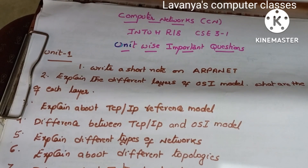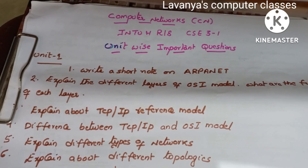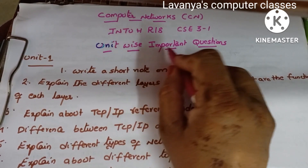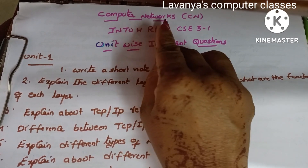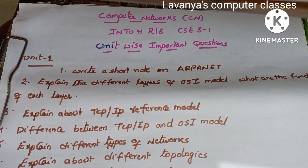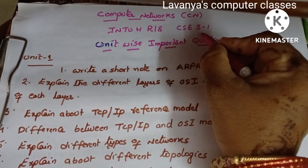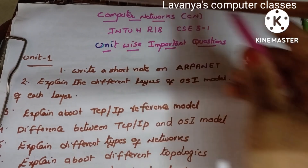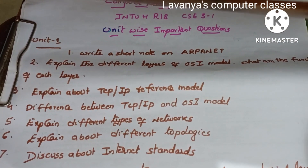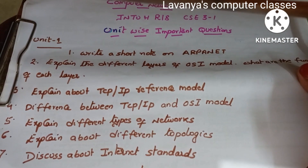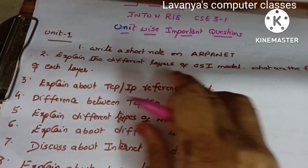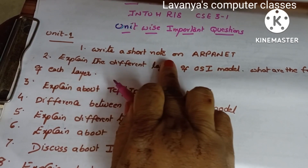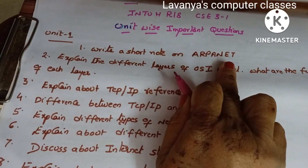Welcome to Lavanya's Computer Classes. In this video, I will explain important questions unit-wise for Computer Networks. Computer Networks is in CS3, first semester, JNTU R18. Unit one is the lengthy unit, but all questions are very simple. First question: write a short note on ARPANET.